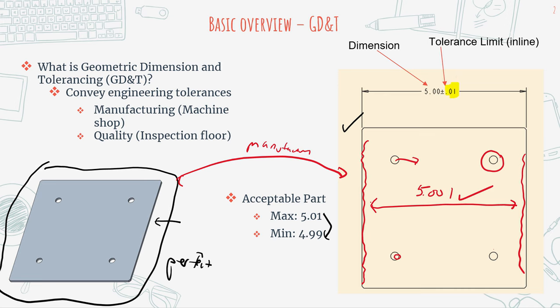GD&T is often used as a way to communicate engineering tolerances to manufacturing so they know to what tolerance a dimension needs to be. It's also a way to communicate with quality, because quality engineers need to know when a part is considered acceptable and when it is not.